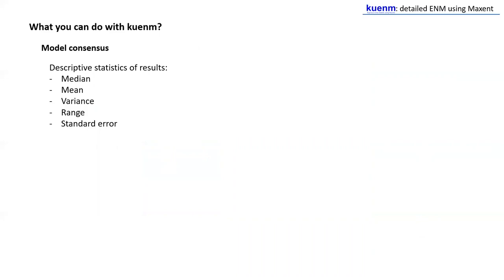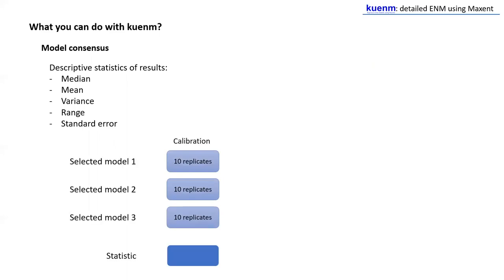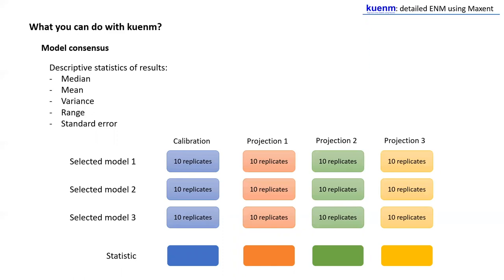KUNHM also helps you to summarize results. Models can produce different outputs, and while calibrating you can end up with more than one best or selected model. When that happens, you need to produce a consensus among results and also represent how variable the conditions were — a central tendency and a dispersion of your results. KUNHM allows you to calculate those descriptive statistics, considering distinct models and producing those statistics for the distinct areas of projection, calibration area, and others.